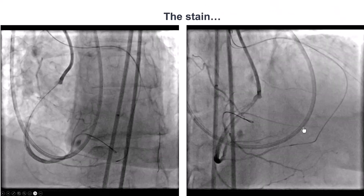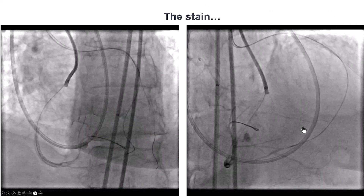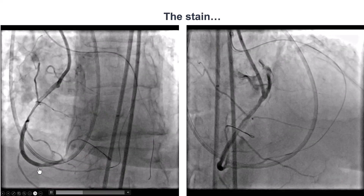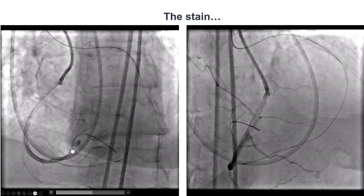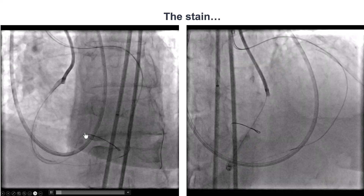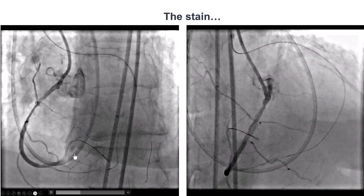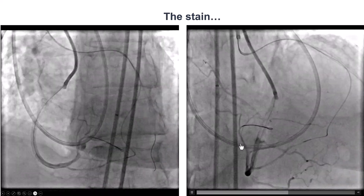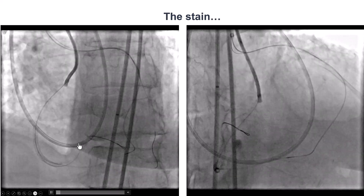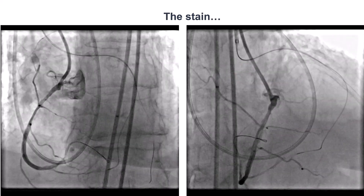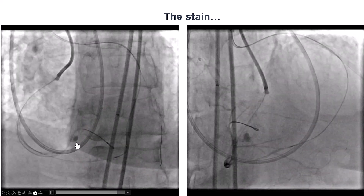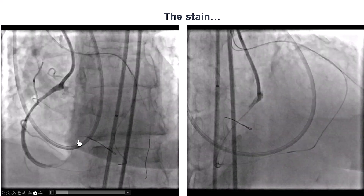After doing that, we saw good news and bad news. The good news: we now have much better flow into the posterolateral and the RCA in general. The bad news: we now have a stain. This staining likely represents a distal vessel perforation, likely from the Sion black wire when we were trying to wire into the right posterolateral.